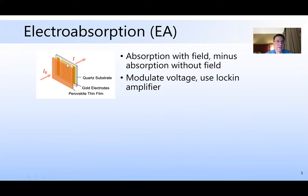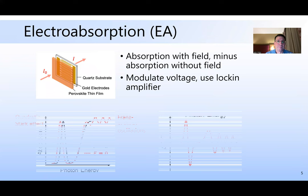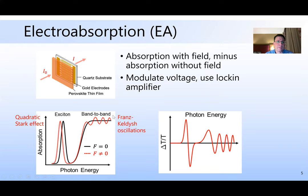Electroabsorption is basically you just apply a voltage to get the absorption with the field, and then subtract off the absorption without a field. We do that modulation using a lock-in amplifier, and we reference it to the voltage on-off frequency that we apply. And the black curve here is what you get with no field, just a cartoon. And when you apply a field, typically the exciton peak shifts via the quadratic stark effect, and the band-to-band absorption generates oscillations, which are well known as Franz Kaldisch oscillations. When you subtract the two, you get something that looks sort of like this.